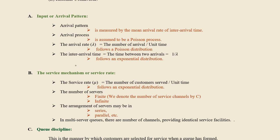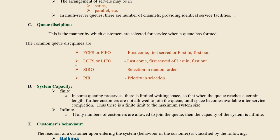The arrangement of service may be in series or parallel. Series means there are multiple sequential services — for example, if you go to a clinic, you first meet a doctor, then go to a medical shop to get medicine, then go to an injection room. This is called a series of service. In a parallel arrangement, in a multi-server queue, there are a number of channels providing identical service facilities.